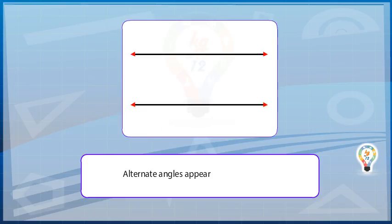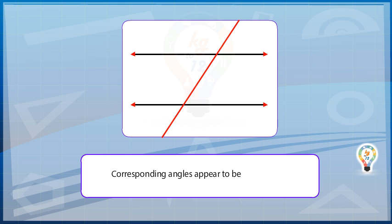Alternate angles appear to be a Z shape. Corresponding angles appear to be an F shape.